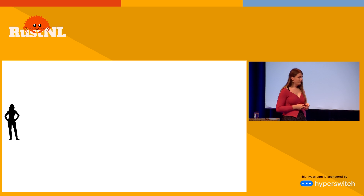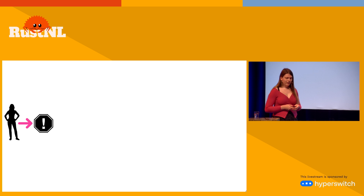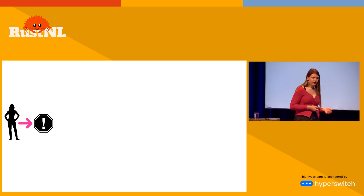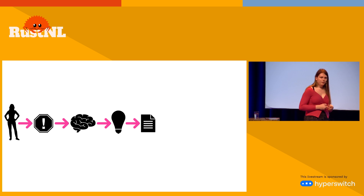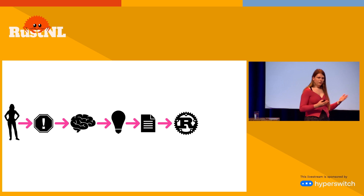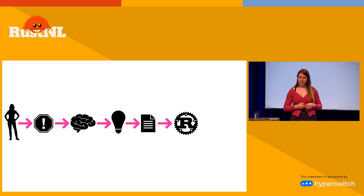And this process starts with you, the user. You are working in Rust and you have any kind of problem — a stumbling block could be a big thing, something that's currently impossible in Rust, or it could be something small, some functionality you're missing in a standard library. Then you spend time thinking about that problem, you come up with an idea, and eventually you write down your solution and submit it as a proposal to the Rust project in the form of an RFC or an ACP.